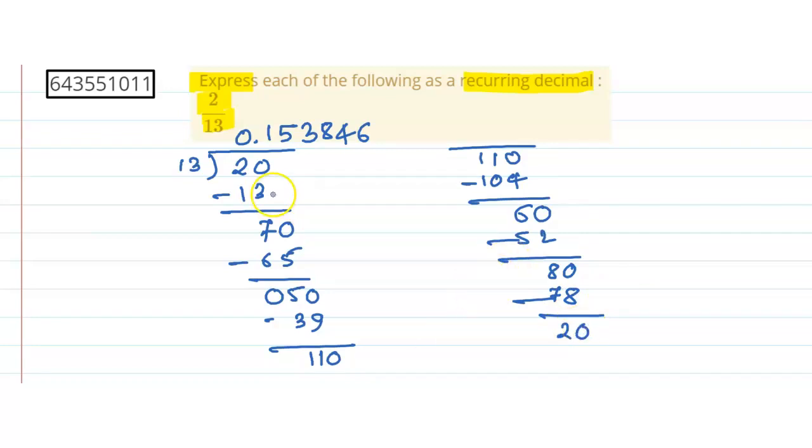Now see again this number is coming. Again in the next we have 13 ones are 13. In the next term we will get 70.